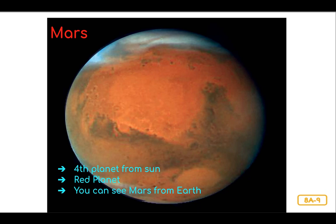The further you get from the Sun, the colder it is and the longer it takes to complete a revolution, or make one trip around the Sun. It takes Mars 687 Earth days to revolve around the Sun. It is interesting, though, that Mars rotates on its axis at about the same speed as Earth.